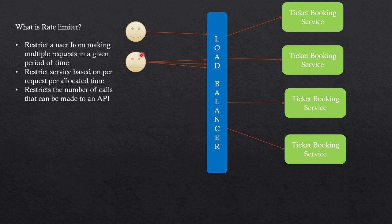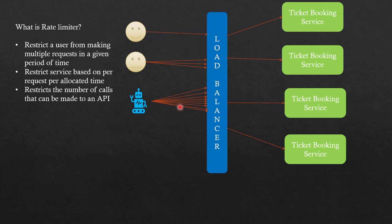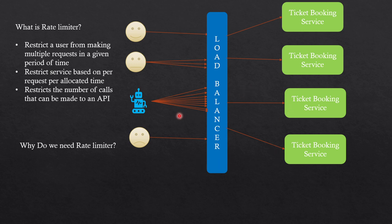It can also restrict the overall number of calls being made to the API from all users coming to the application. If we extrapolate this to a bot — unlike a human user who might get bored, a bot can keep sending the same request again and again, blocking all seats so that none of the bookings are made. This makes the application unusable, users lose faith, and any genuine user will always find seats already blocked — so there's no point using the application.